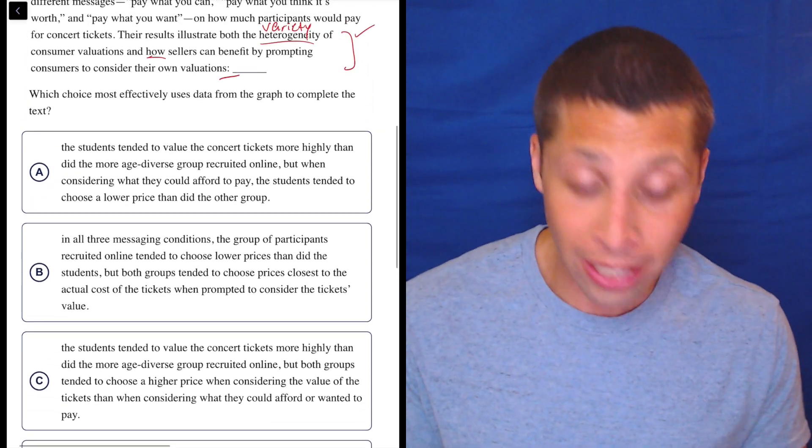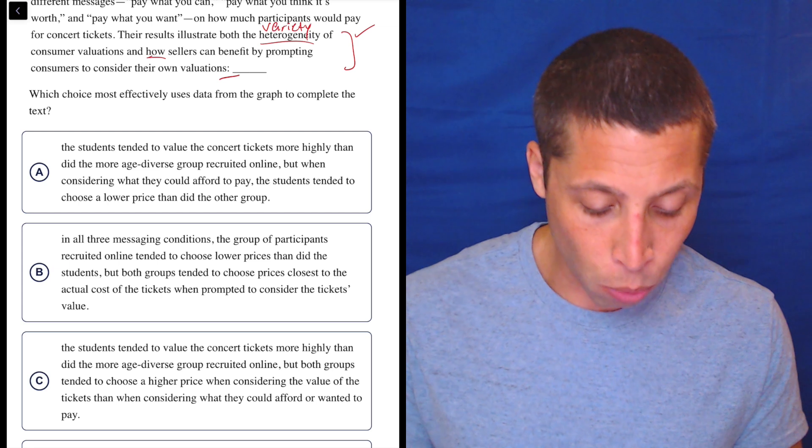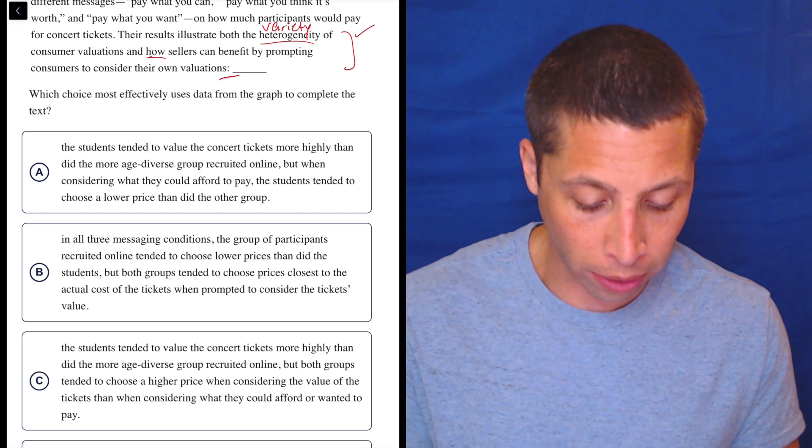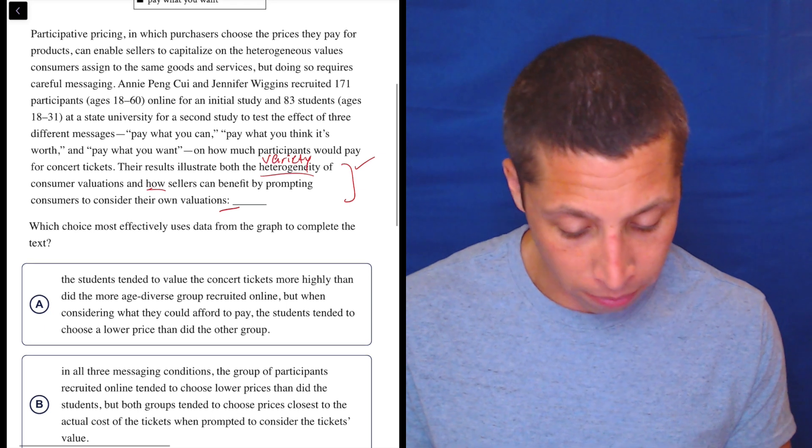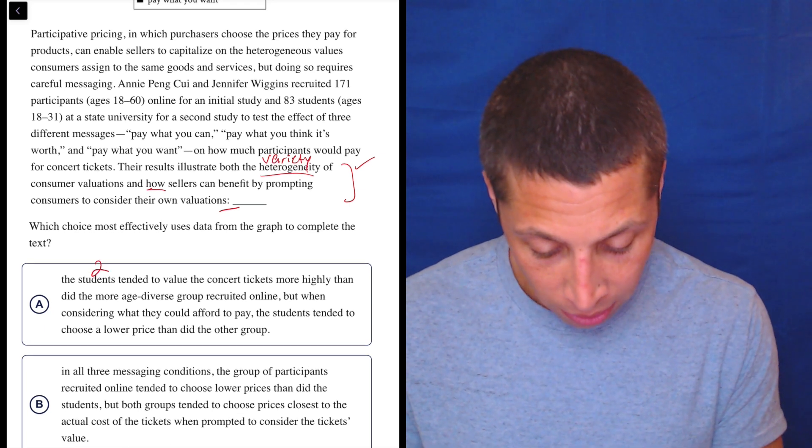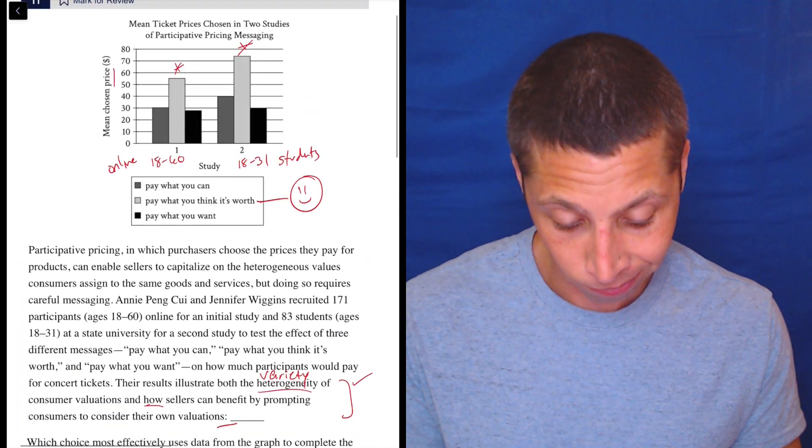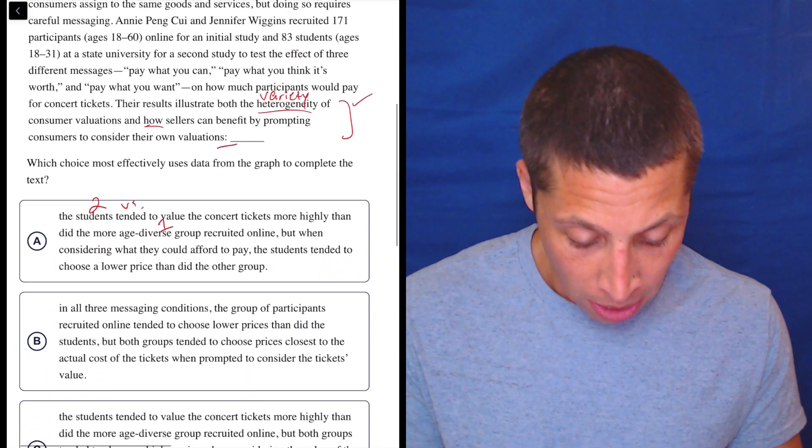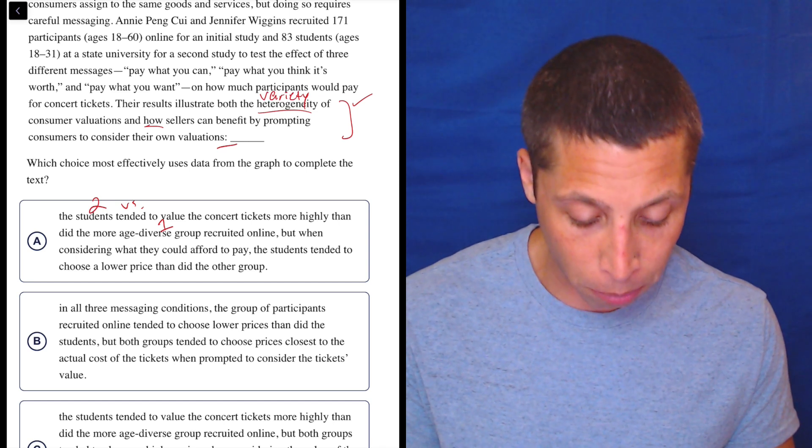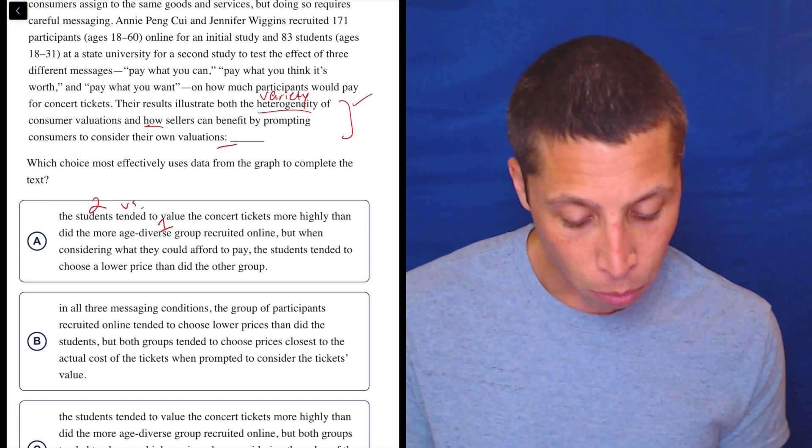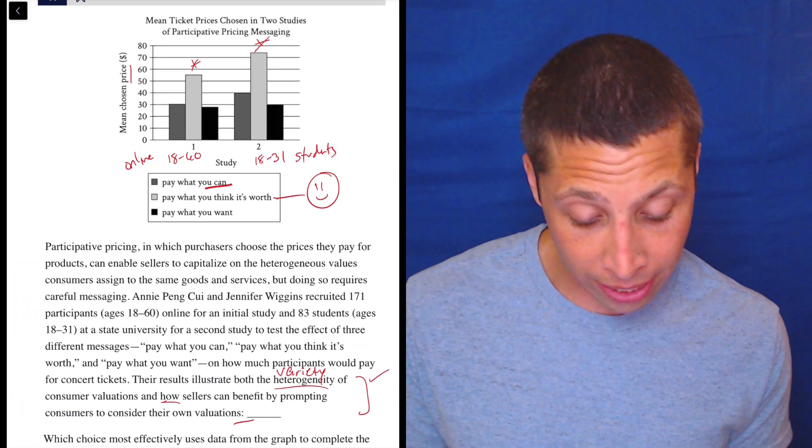So, the column is telling us just to support this. The students tended to value the concert tickets more highly than did the more age-diverse group recruited online. Okay. So, that's two versus one, right? The students, that's group two, versus the age-diverse group, that's one. So, is that true? Yeah. Maybe. Seems so. But when considering what they could afford to pay, the students tended to choose a lower price than did the other group. What they could afford to pay, pay what you can, I guess, is that.